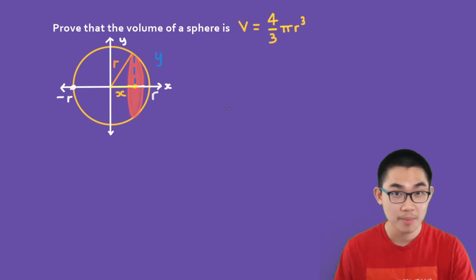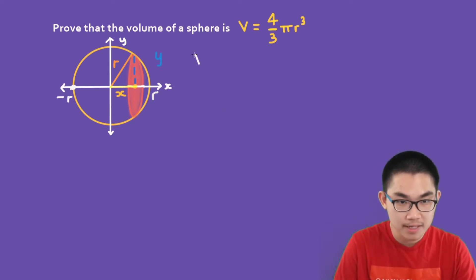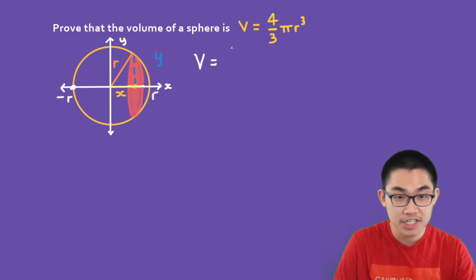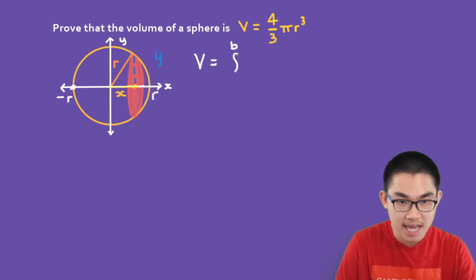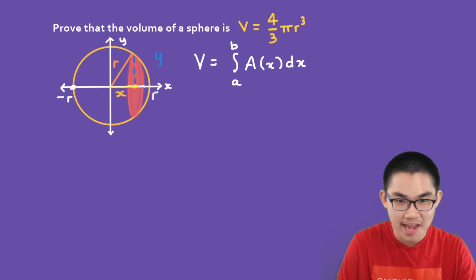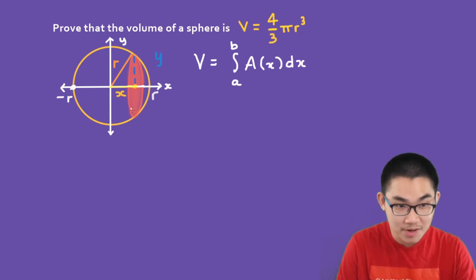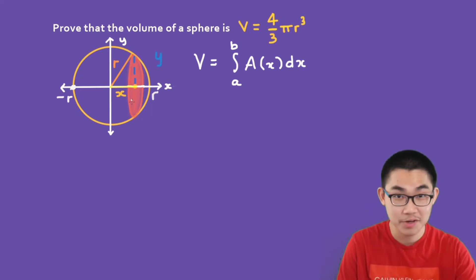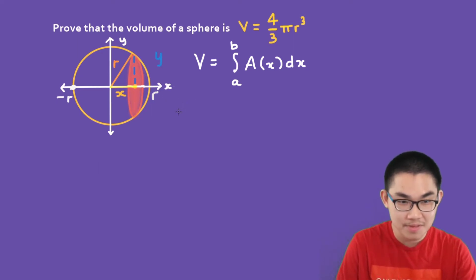Now there's one formula that you need to know, which is the volume formula. The volume of any shape is the same as the integral from a to b of A(x) dx, where A(x) is the area of this cross-section — so the area of that circle. That's the first thing we need to find.